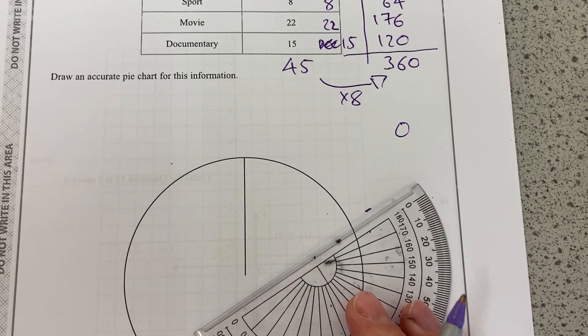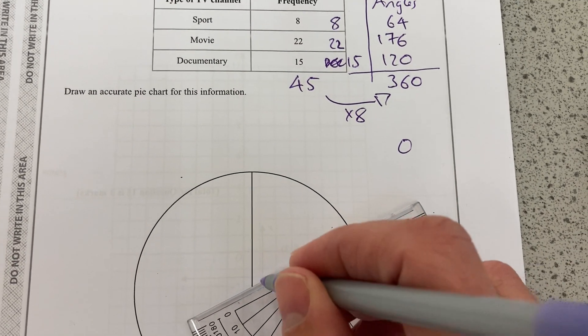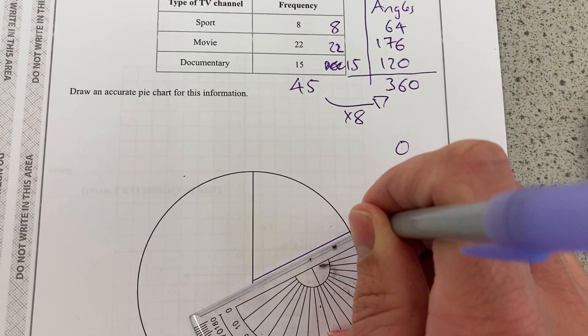And then if you've got two hands to use, you draw an accurate line there.